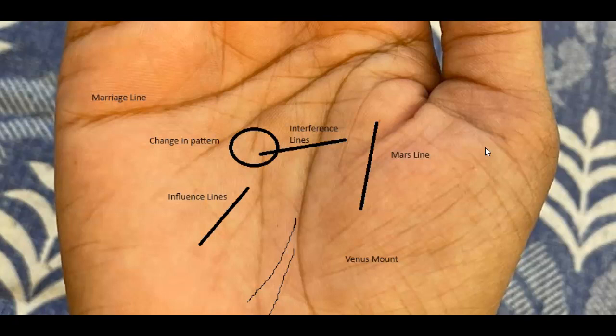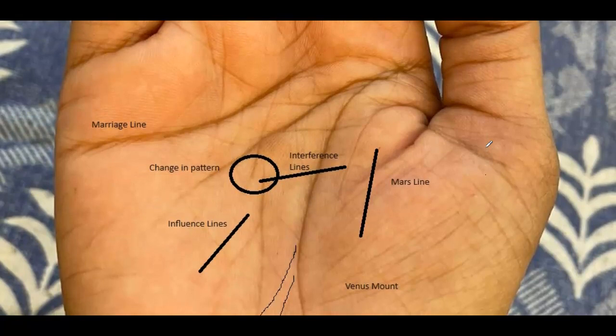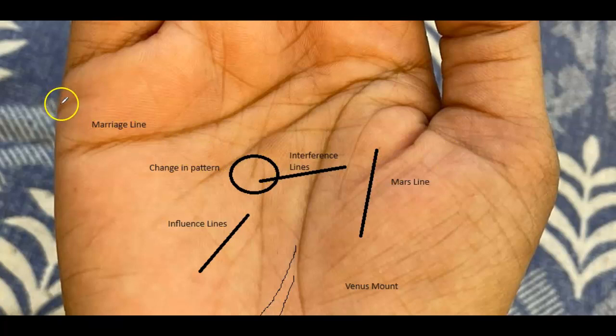The things that were accurate about this palm was that there is a delay in marriage. Things are getting a bit delayed and not setting as per the thought process the person had. Now that clearly is there because these marriage lines or relationship lines are shifted upwards. The terminology given to this line is marriage line, but it does not mean marriage. It only indicates important relationships coming into picture and having good chances of converting into marriage.